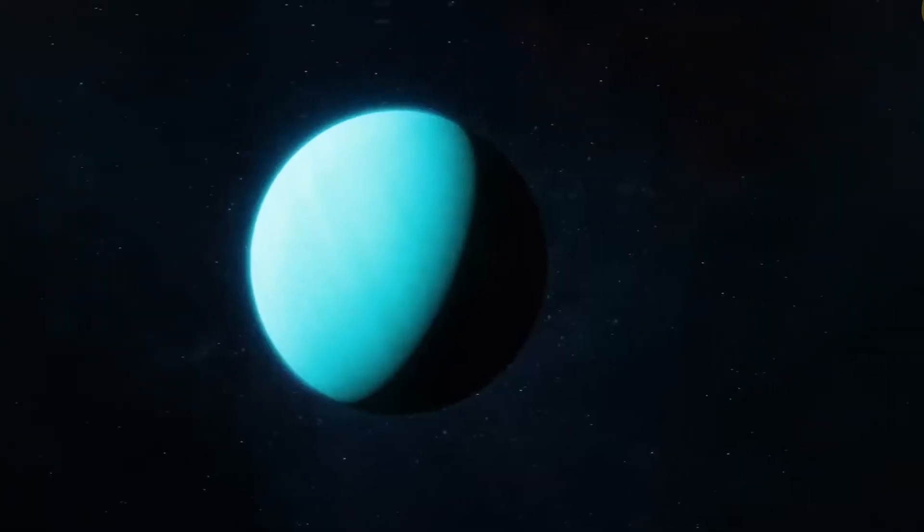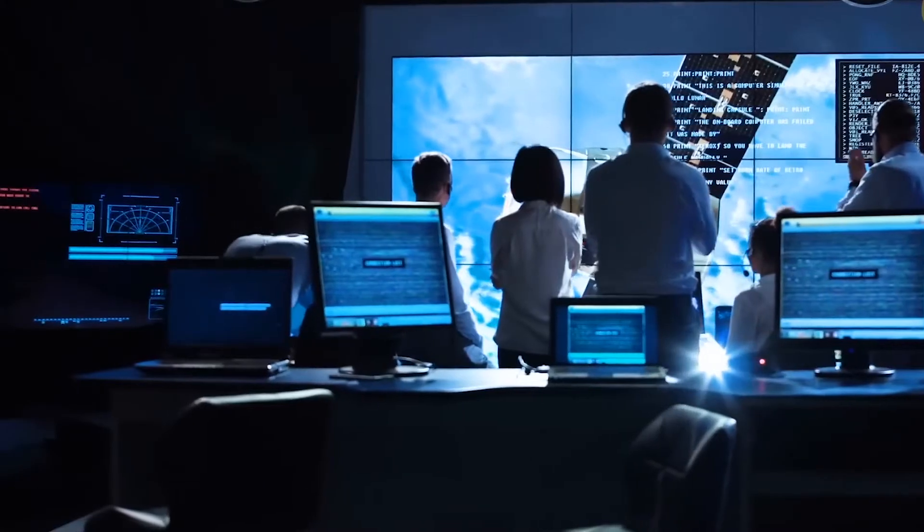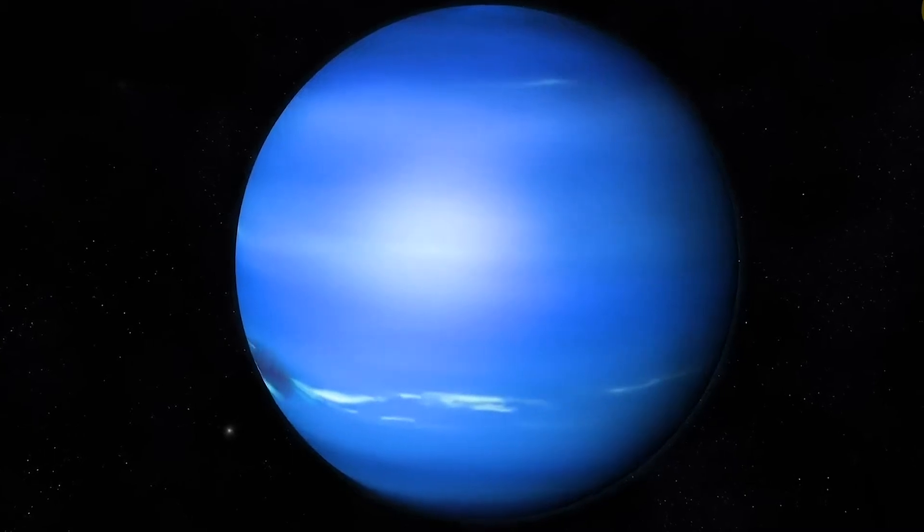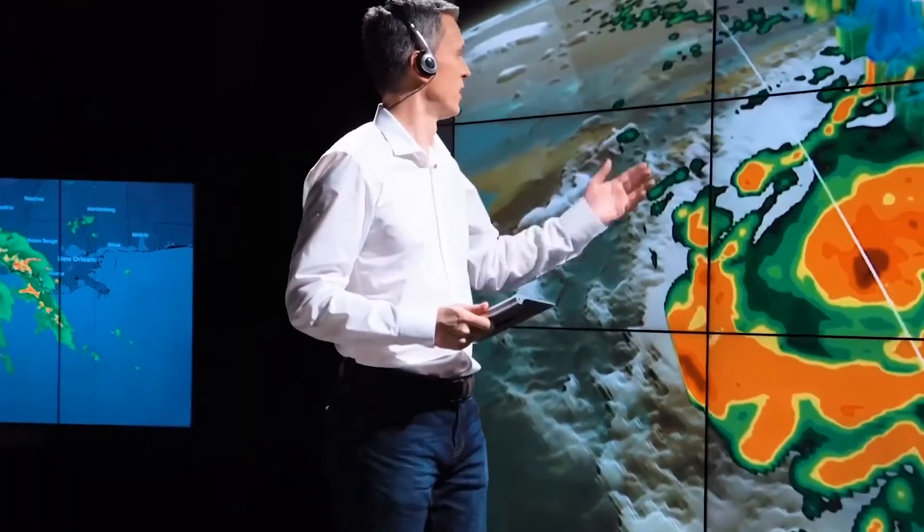Storm dynamics: like other giant planets in the outer solar system, Neptune's atmosphere experiences powerful and turbulent weather systems. The great dark spot is thought to be a result of the interaction between different layers of the atmosphere and the planet's rapid rotation.